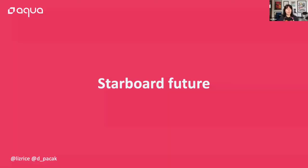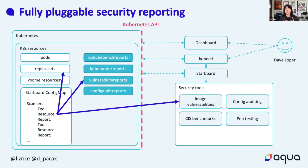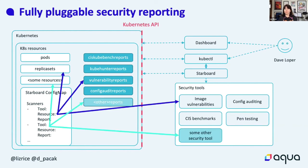Today Starboard is extensible - it's possible to add support for new security tools, though you do need to write some code. Where we would love to get to in the future is the ability to add new security tools through configuration. Imagine it's as simple as telling the operator: I want to watch a certain type of resource, and when there are changes in that resource, call a particular security tool and it will generate custom resources of a particular type. So adding support for a new type of security tool would be a case of creating a new custom resource definition and adding the configuration for that new tool. That's the vision for pluggability.